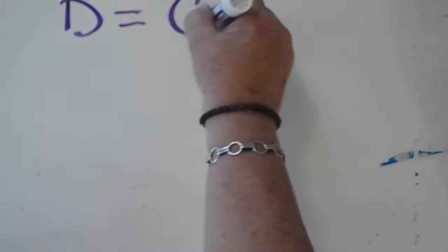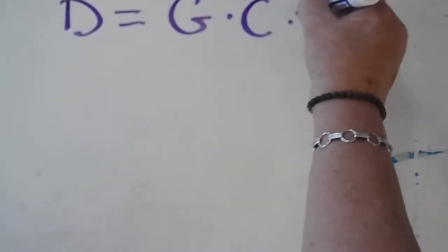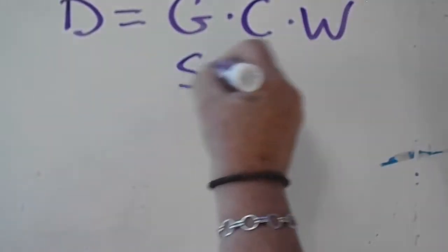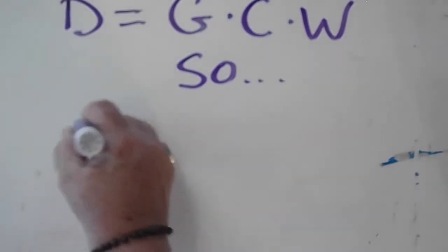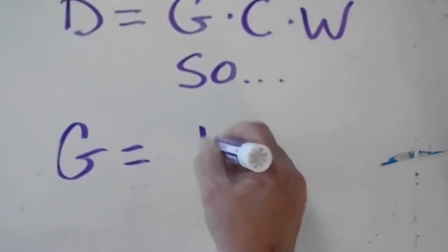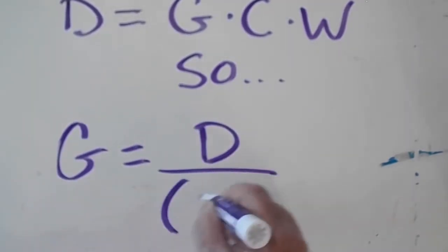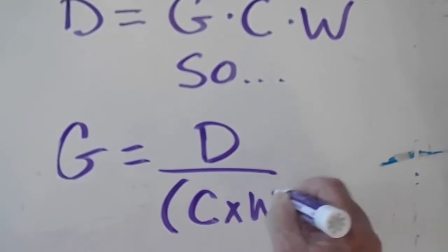Conversely, the smaller the wheel circumference, the higher or bigger the gear multiplier needs to be to travel the same distance. The circumference of the wheel becomes a fixed value to be used in the formula G = D ÷ (C × W).